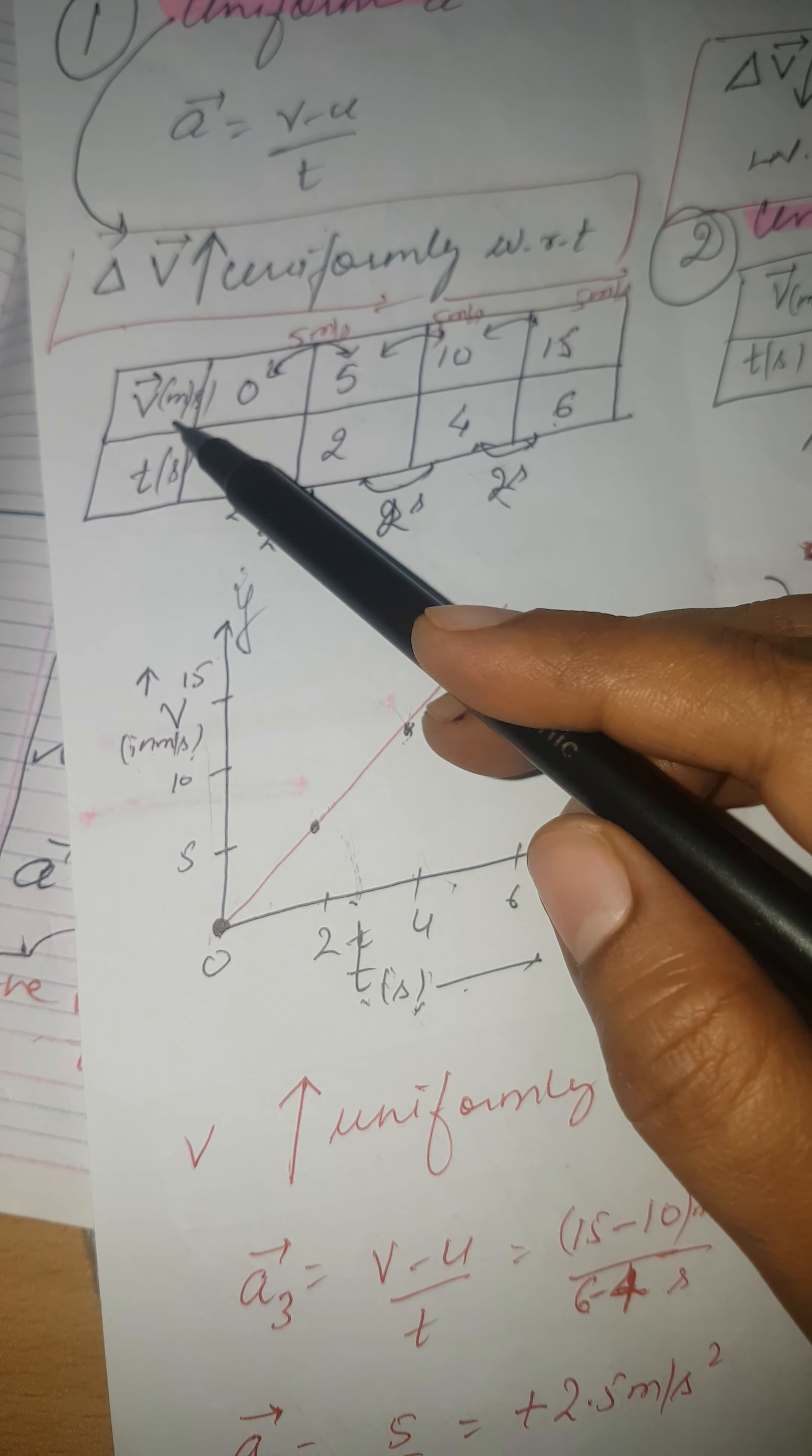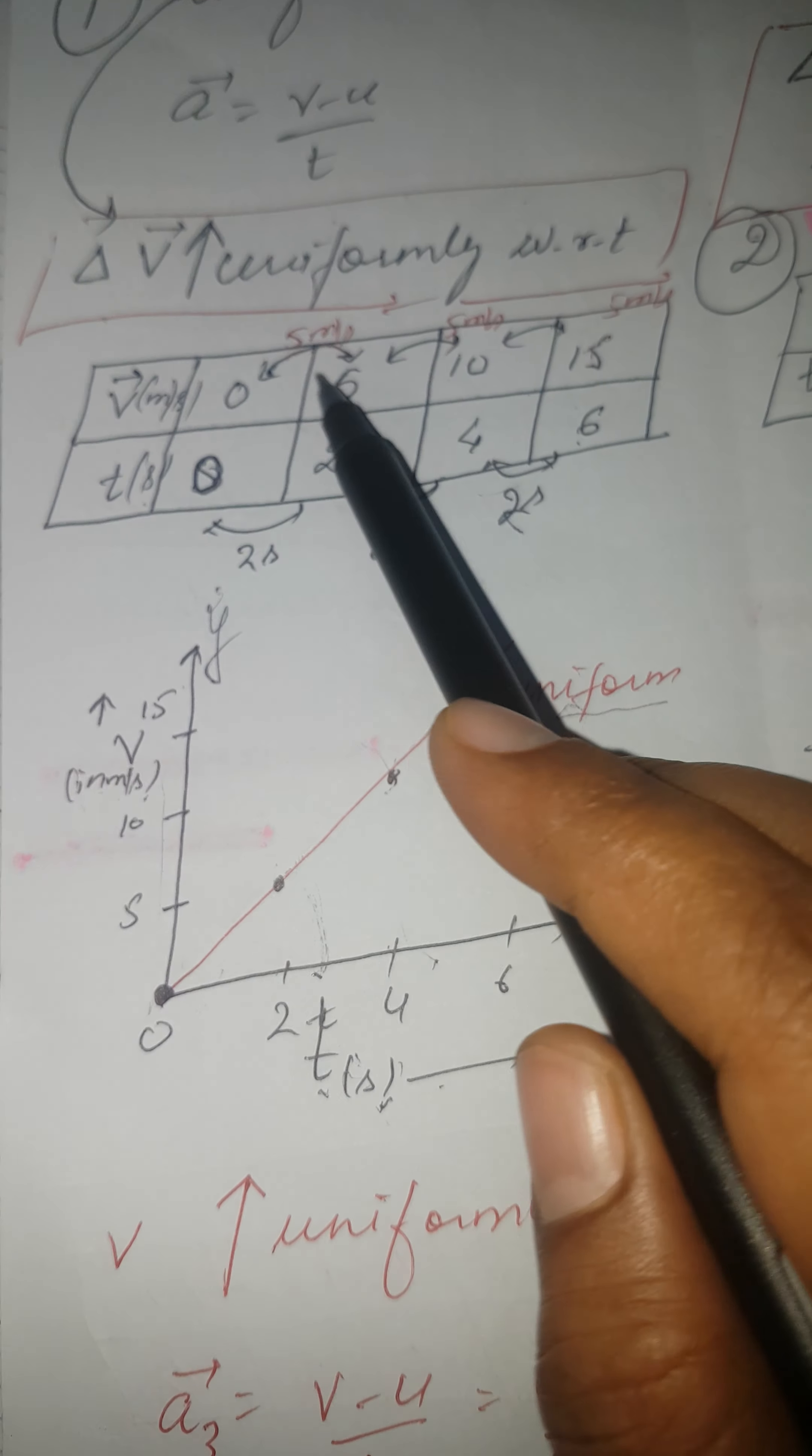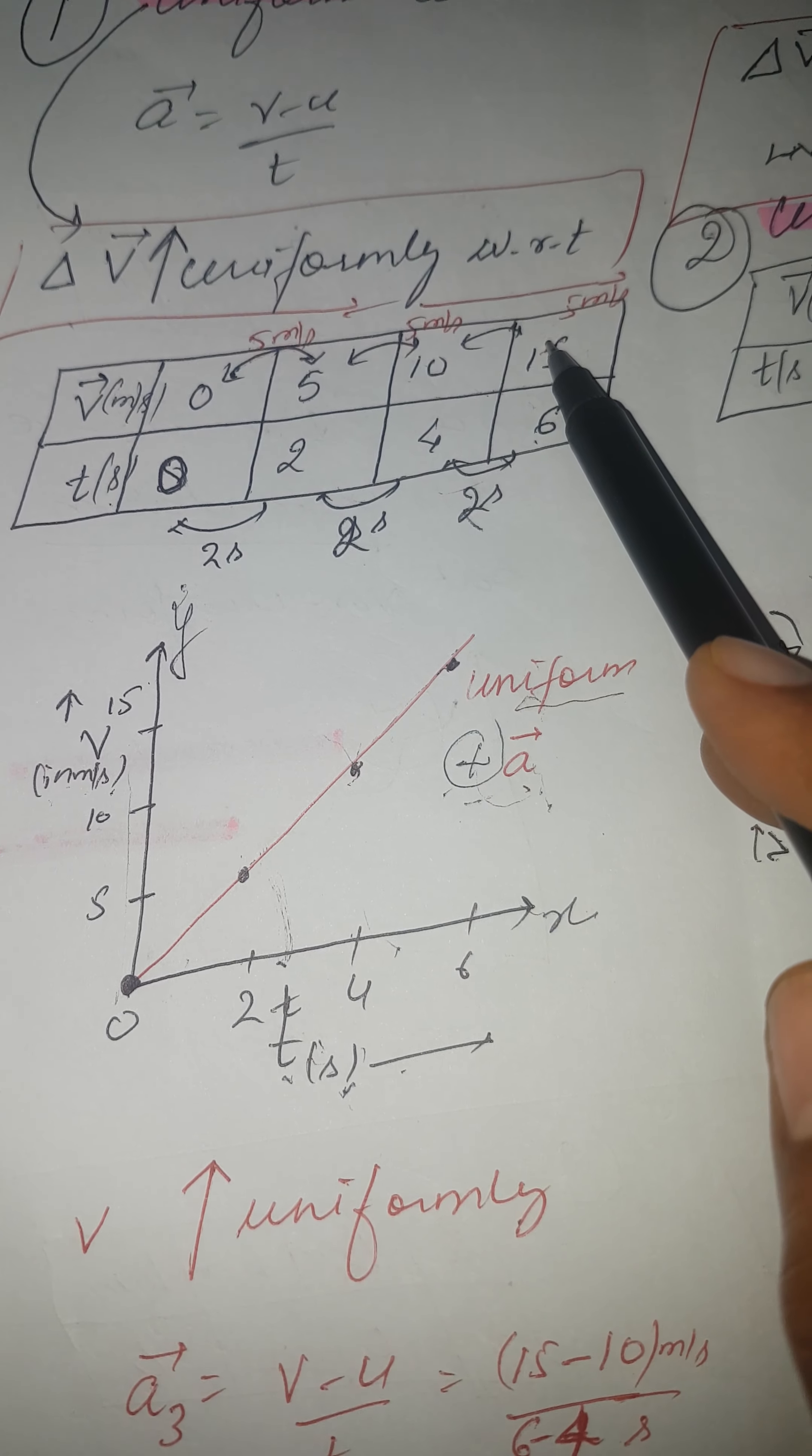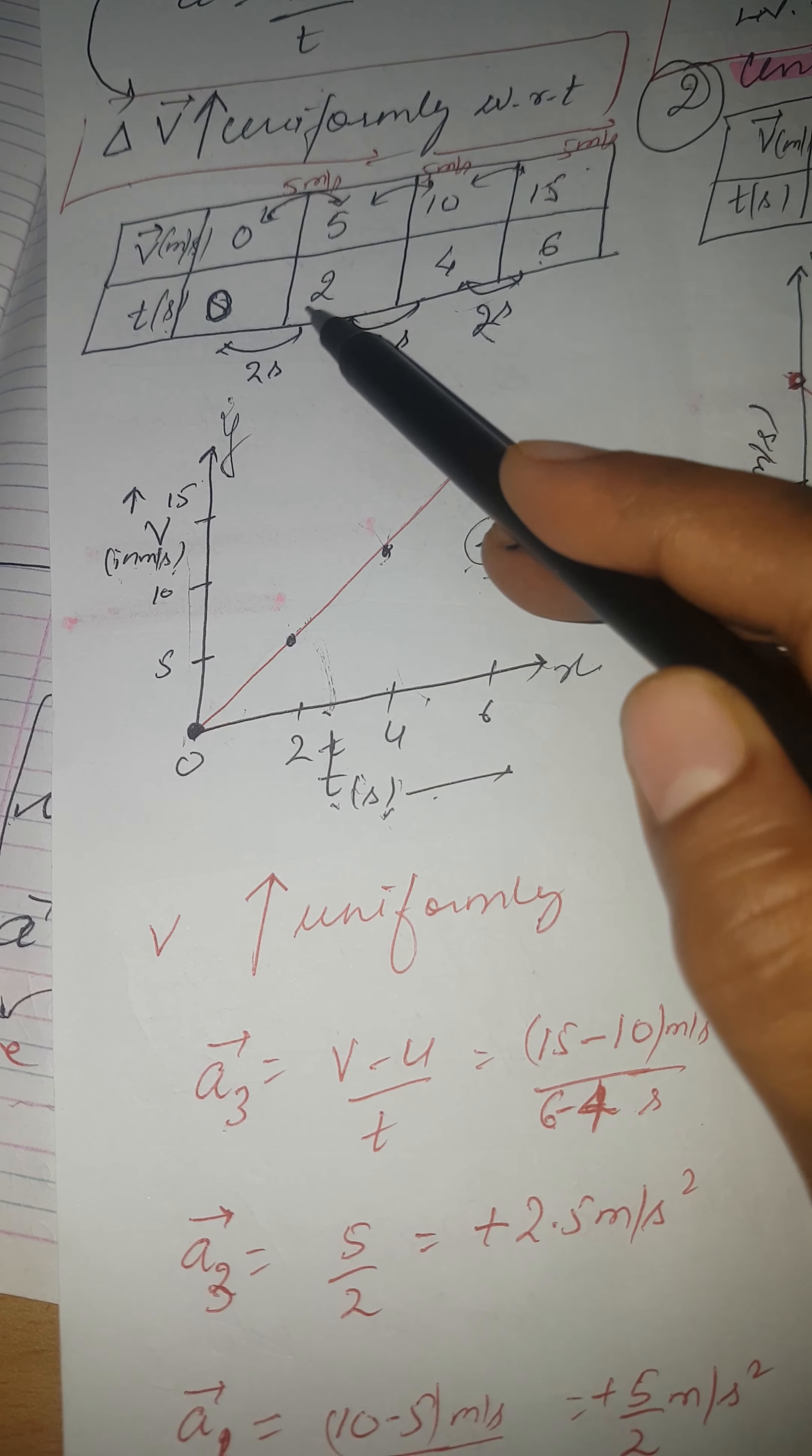I have calculated the value of acceleration from this data. You can verify that acceleration is positive. Velocity is increasing uniformly, that must be clear to you. Velocity is increasing uniformly, 5-5 meter per second increase. What does acceleration remain? What is the value? Acceleration is coming to you.